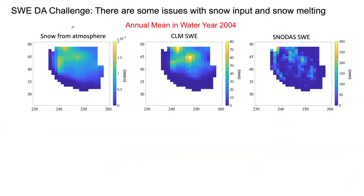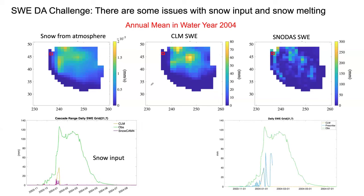For the SWE assimilation, we have two challenges. The first is that there's an issue with the snow input from the atmosphere, because as you can see in this map, it doesn't really reflect reality where the high mountains are. We assume it should look like the USFWS remastered data — the SWE in-situ data — that actually reflect the locations of the high mountains in the western United States. Also, the pattern of SWE from CLM doesn't reflect what the SNODAS data reflects either.